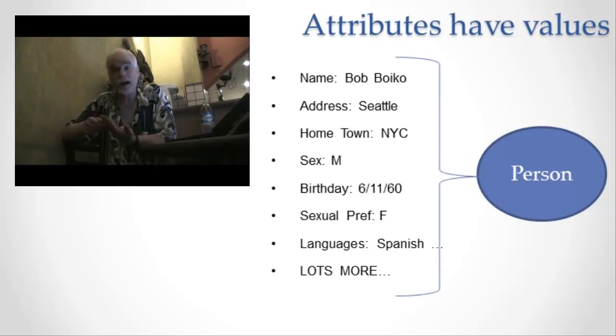Those values come in certain varieties. Bob Boyko is a name. Date of birth is a date. Age is a number. Those values have different types, we call them.